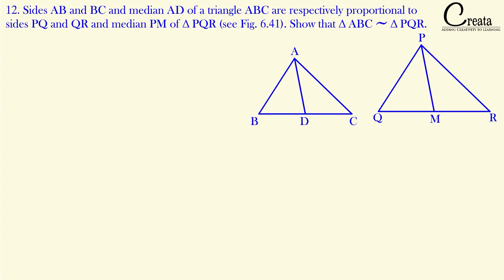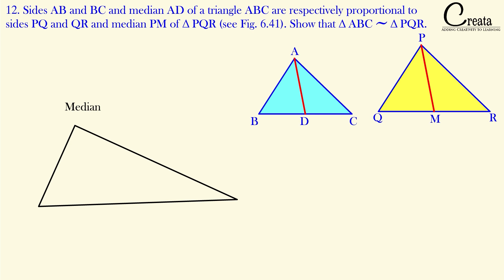Let's move to question number 12. The question is: the sides AB and BC and median AD of triangle ABC are respectively proportional to sides PQ and QR and median PM of triangle PQR. Show that triangle ABC is similar to triangle PQR. Our first step is to observe the question and the given figure. Here two triangles are given — triangle ABC and triangle PQR — and both triangles have medians AD and PM respectively.